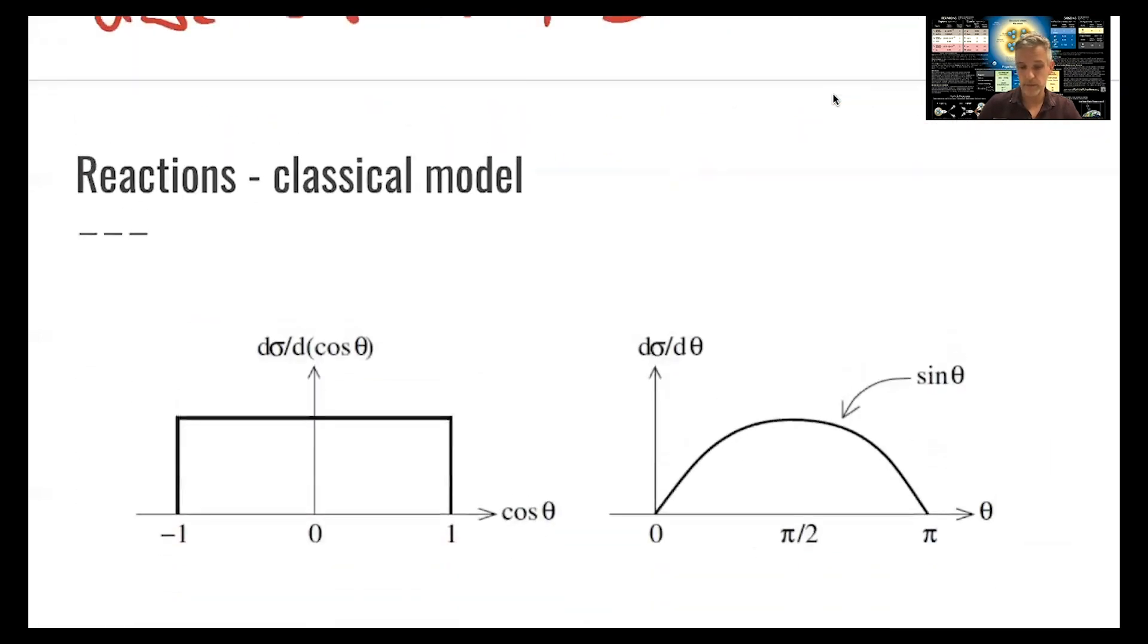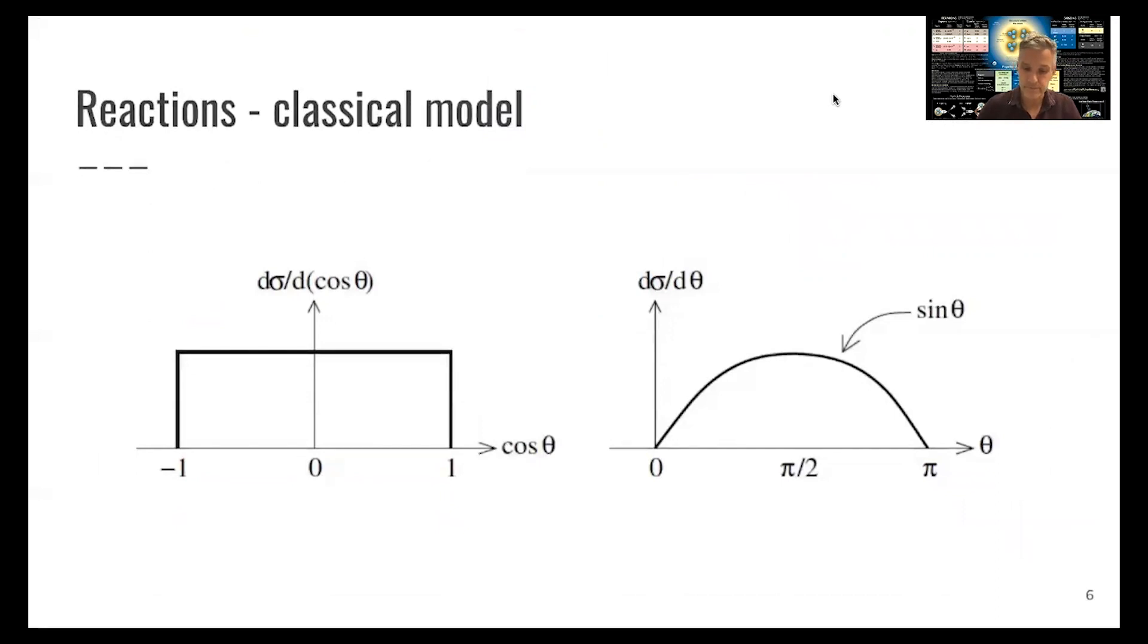So for this specific problem here, we talk about an isotropic reaction, because by definition, the cross section per solid angle is independent of theta and phi. The mapping between sine theta and theta is not trivial - that's why you see this shape of the distribution. But the d sigma d cosine theta is flat if you look at this as a function of cosine theta.